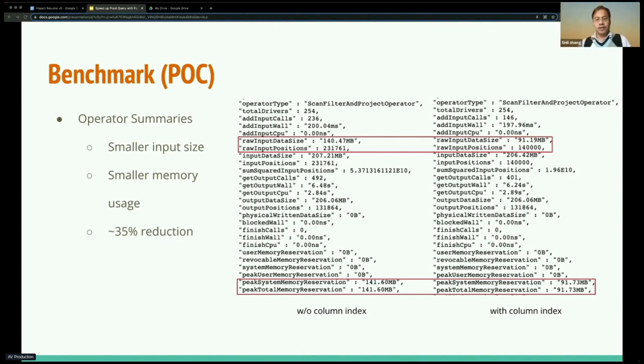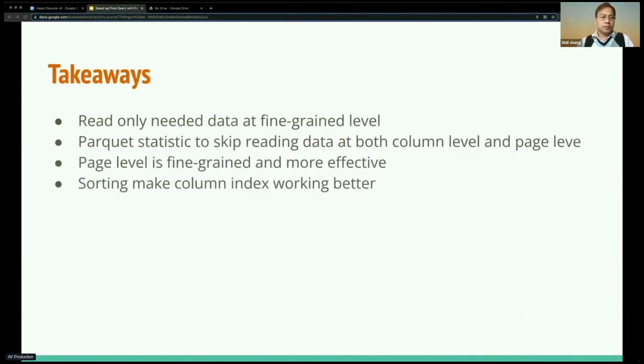Thanks Chen. One thing to point out is that Presto already has row group filters based on the statistics. So this effort for the page level index is a further reduction based on that filter. The takeaways are: read only needed data at a fine-grained level, Parquet statistics to skip reading data at both column level and page level. Page level is fine-grained and more effective. Sorting makes the column index work better. Thanks everybody. Have a great day.